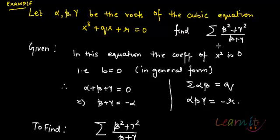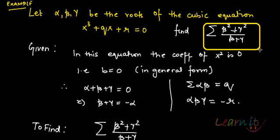Let's take another example. Alpha, beta, gamma are roots of a cubic equation given as x³ + qx + r = 0. It's a more simplified form of a cubic equation because the coefficient of x² is 0. We need to find the expression: summation of (β² + γ²) upon (β + γ).